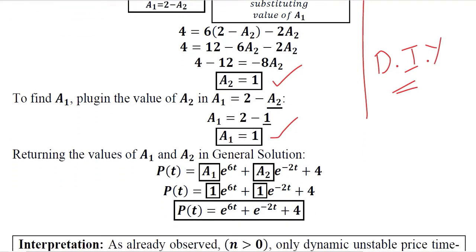A1 and A2 are found. We can put them in their respective values A1 and A2. So these are the results of the time path of the market model with price expectations, where n is positive, where the distinct real root case is the only possibility.